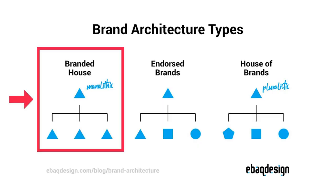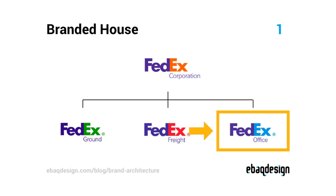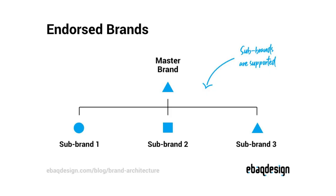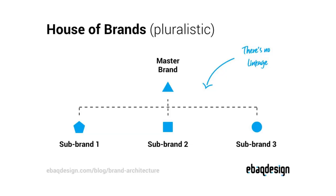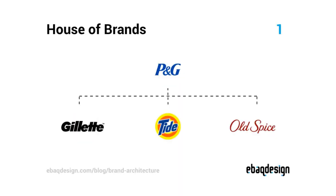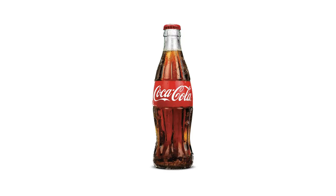First we have branded house, also called monolithic brand architecture, where the master brand as well as all sub-brands share the same visual identity but with slight variations — like FedEx using different colors for their divisions, or Apple using a different name for the product. Second we have endorsed brands, where the master brand supports all sub-brands which have a unique design to some extent, but are all supported by the visibility of the master brand — for example Nestlé. Then house of brands, also called pluralistic, where the master brand has no linkage to sub-brands, which all have totally unique identities — for example Unilever or Procter & Gamble. And fourth, the hybrid model, which is just a mix of the above, typically happening when a company starts with one product, develops extensions, and then totally new brands are developed or acquired — for example Coca-Cola.